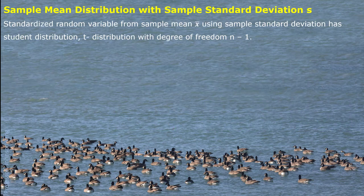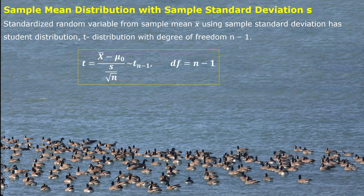When the population standard deviation is not known, we use sample standard deviation instead. Then the standardized sample mean will follow the Student distribution, called t-distribution, with degrees of freedom equal to sample size minus 1.